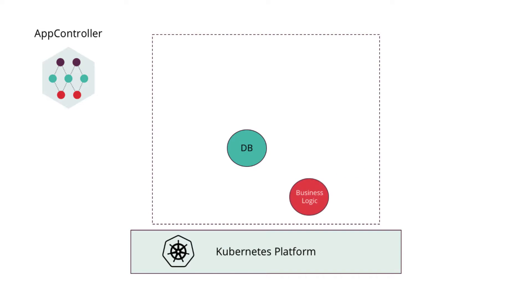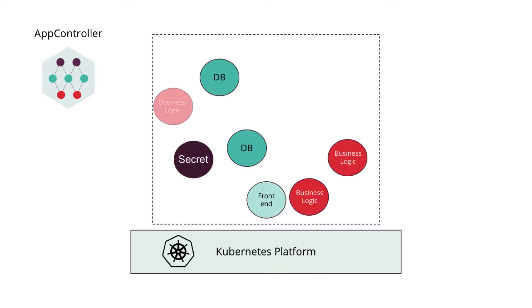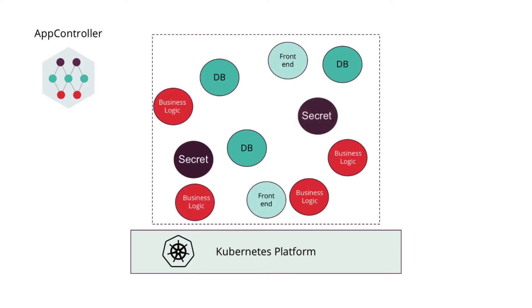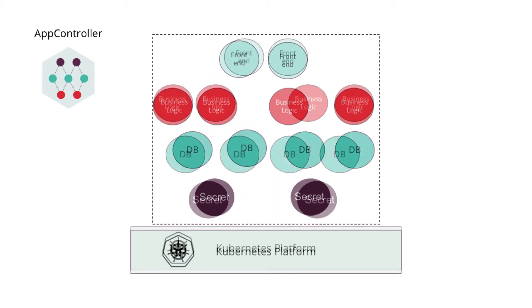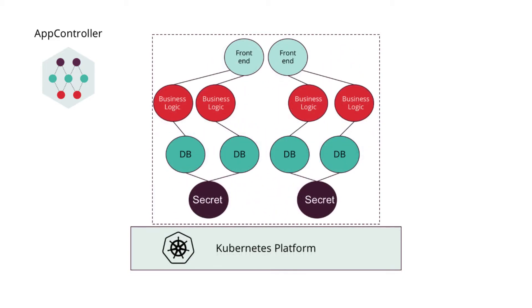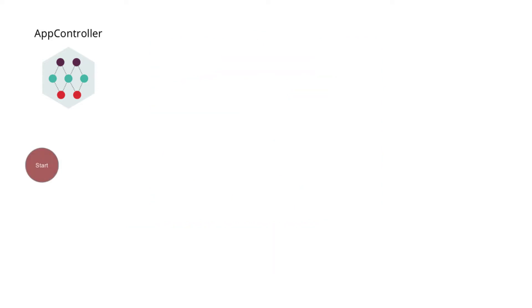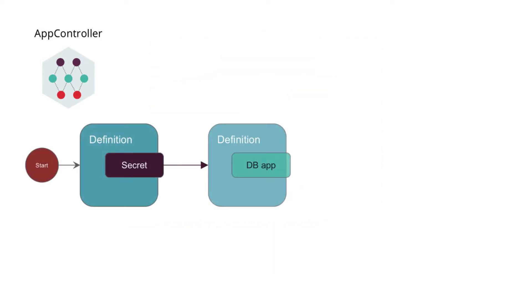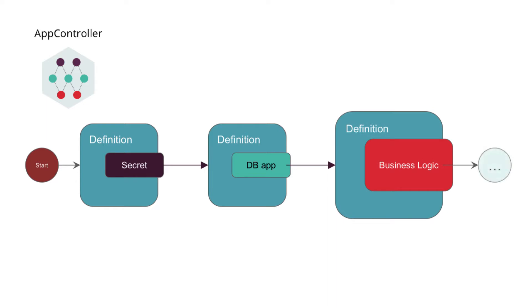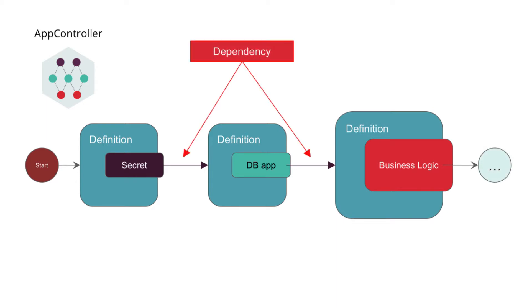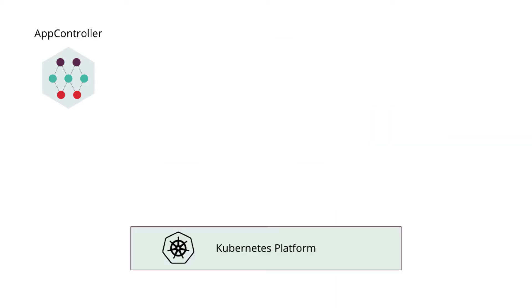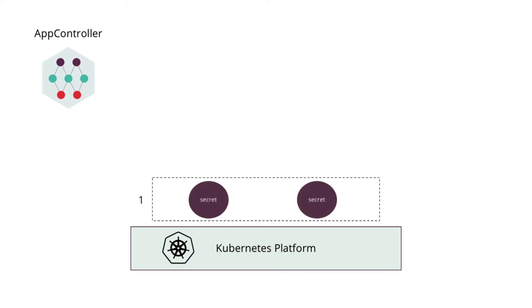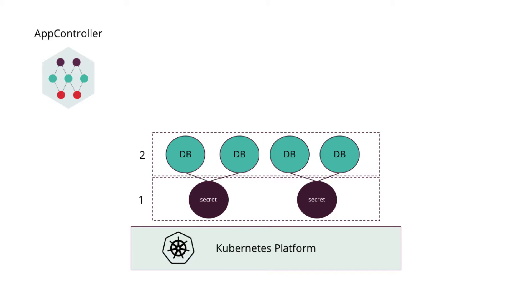Kubernetes by default provisions resources in random order. While modern cloud native applications are suited to this way of deployment, prior applications are not — they require a specific order of dependency installation so that they can be deployed properly. App Controller introduces a deployment graph built with definitions and dependencies that it uses to execute a number of independent kubectl calls to create each layer of the application in the specified order, ensuring proper deployment.